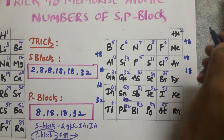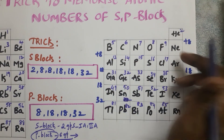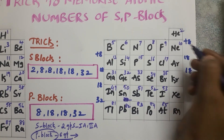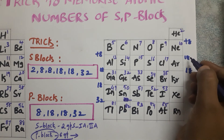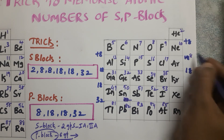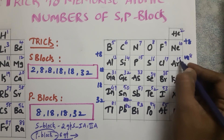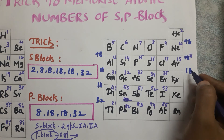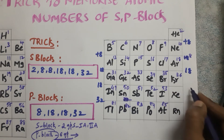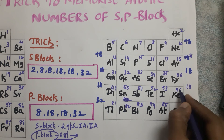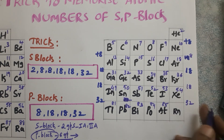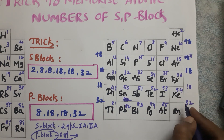For the noble gases, helium has atomic number 2. After hydrogen we get helium, which is 2. Then 2 plus 8 equals 10 (neon), 10 plus 8 equals 18 (argon). Here we need to add 8 only. Then 18 plus 18 equals 36 (krypton), 36 plus 18 equals 54 (xenon), and then we need to add 32, giving us 86 (radon).